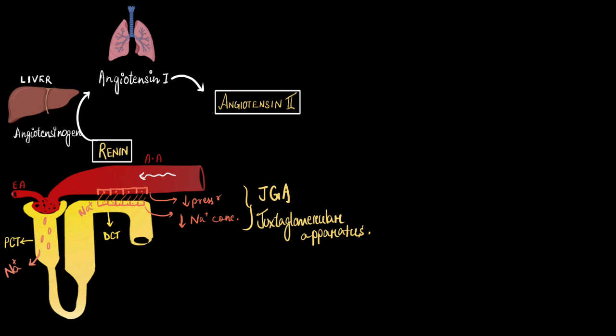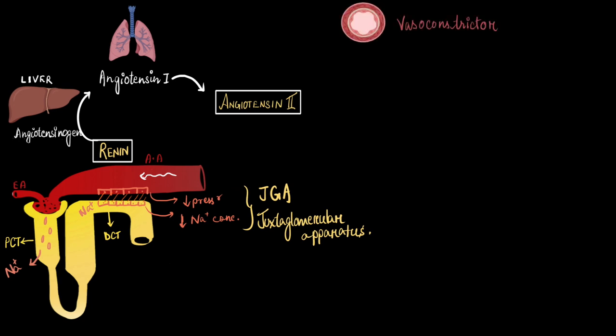Now coming back to angiotensin 2, the first thing it does is constricts the blood vessels. And when the blood vessels are constricted, the blood pressure will increase. So angiotensin 2 is an awesome vasoconstrictor. A very important task is done - increasing of the blood pressure.